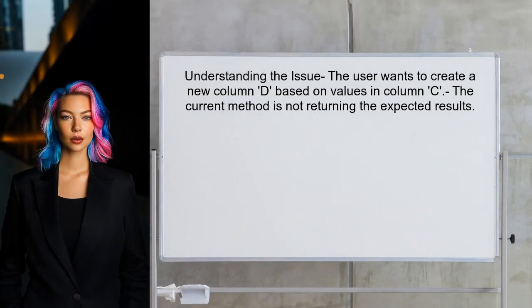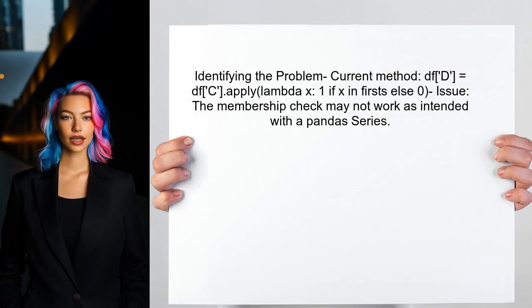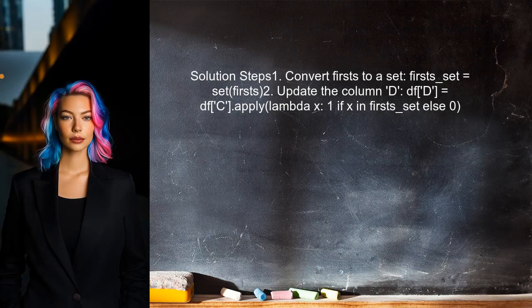To address the user's issue, we first need to understand why the current solution is not working. The user is trying to create a new column based on whether the values in column C are present in the first series. The problem arises because the user is using the apply function with a lambda that checks for membership in the first series. However, the first series is a pandas Series and the comparison needs to be done correctly. To fix this, the user can convert the first series to a set, which will allow for a more efficient membership test.